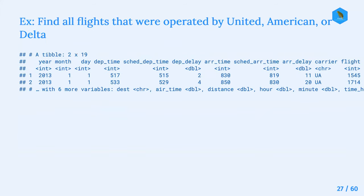This is one of the exercises in the book. The prompt is to find all flights that were operated by United, American, or Delta. These are all carriers.